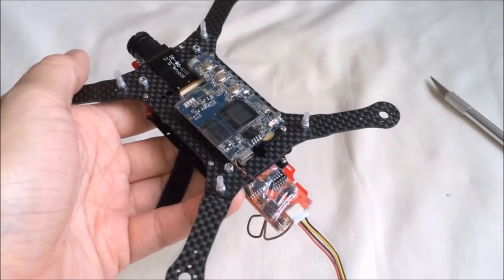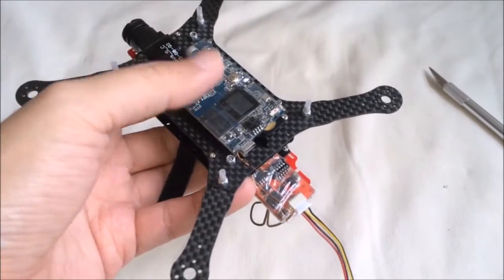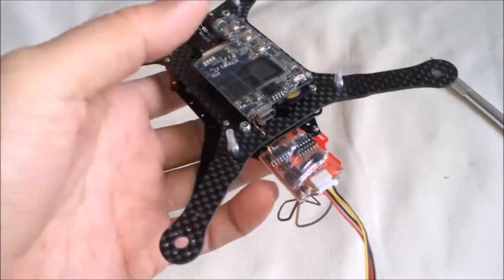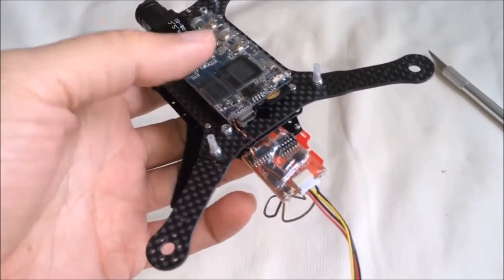Now let's take a look at how we're going to power up this Mobius camera and the VTX, and also hook up the wires which are required for them to work together.